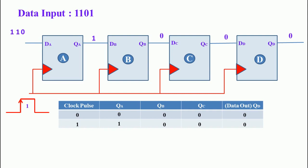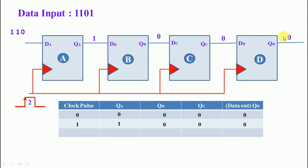After the first clock pulse, the first flip-flop output becomes 1, the second flip-flop output is 0, the third flip-flop output is 0, and the fourth flip-flop output is 0. After the second clock pulse, the second bit is moved along: first flip-flop output becomes 0, second flip-flop output becomes 1, third flip-flop output becomes 0, and fourth flip-flop output becomes 0. Next we apply the third clock pulse — the zero moves forward, the one moves forward, and the new data input is entered.